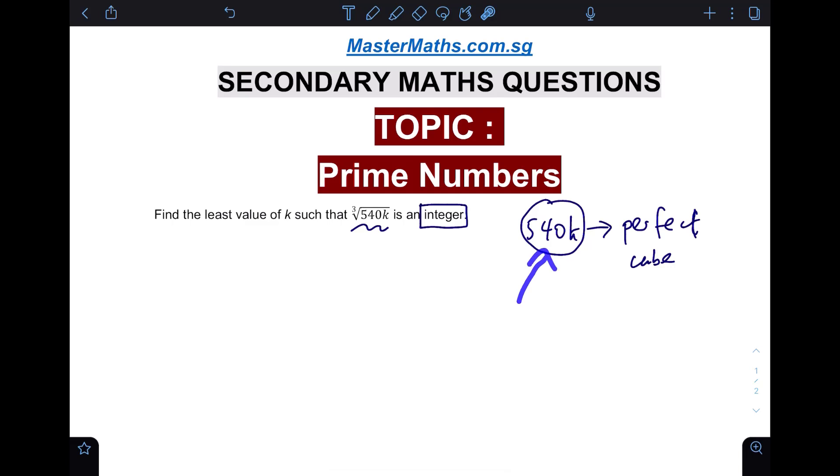The first thing we need to do is to express 540 in its prime index notation. So we divide this by two: 540 by two is actually 270.